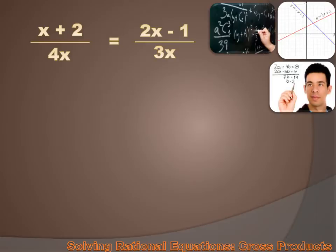I see a couple of fractions here. I see a couple of ratios. And that's because this is a rational equation. Now, how do we solve rational equations?